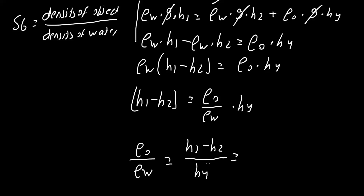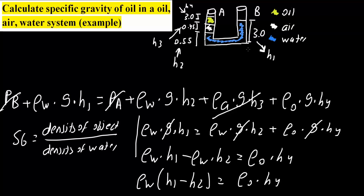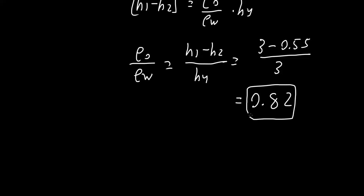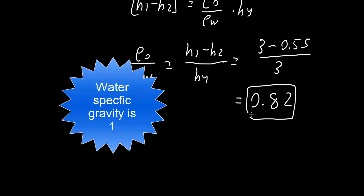We simply need to substitute our values: H1 was 3, H2 was 0.55, and H4 was 3. Using a calculator, we get 0.82 as our specific gravity for oil. This makes sense because oil is less dense than water, and that's all we need to do for this problem.